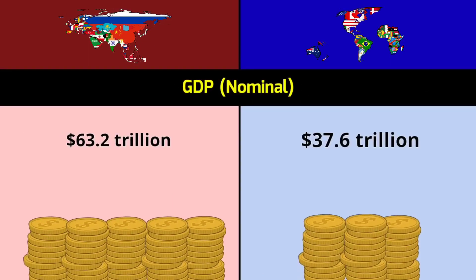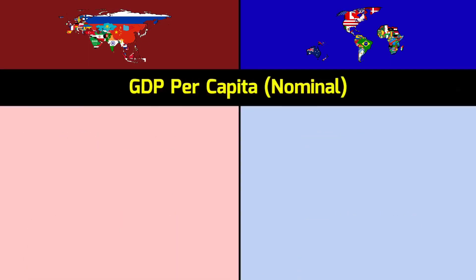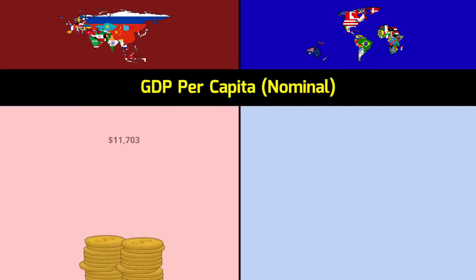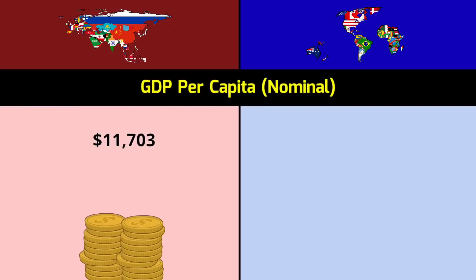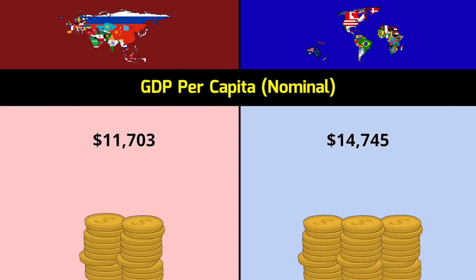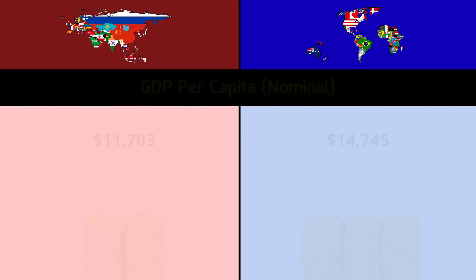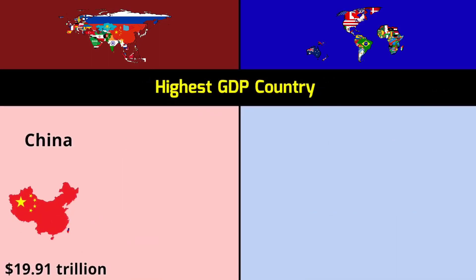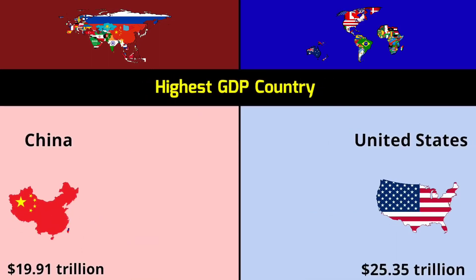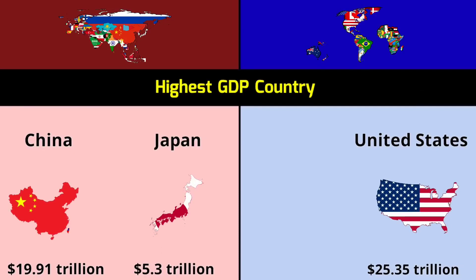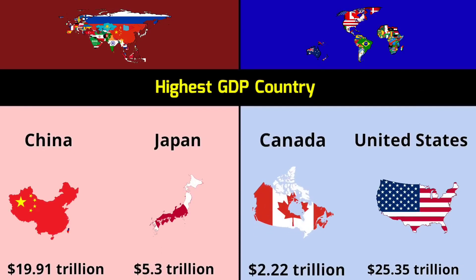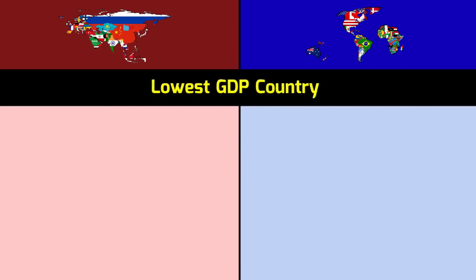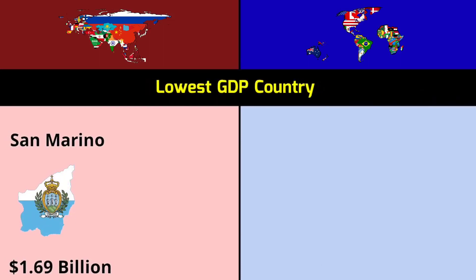GDP per capita nominal: Asia $11,703 vs Rest of World $14,745. Highest GDP countries — Asia: China $19.91 trillion, Japan $5.3 trillion; Rest of World: United States $25.35 trillion, Canada $2.2 trillion. Lowest GDP countries — Asia: East Timor $1.92 billion; Rest of World: Tuvalu $66 million, San Marino $1.69 billion, Nauru $134 million.